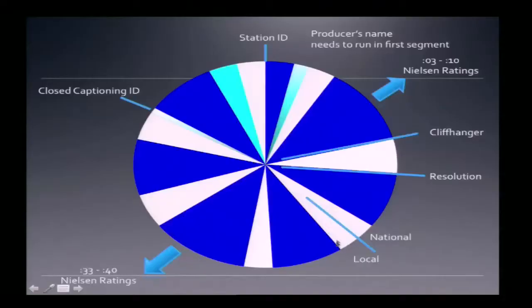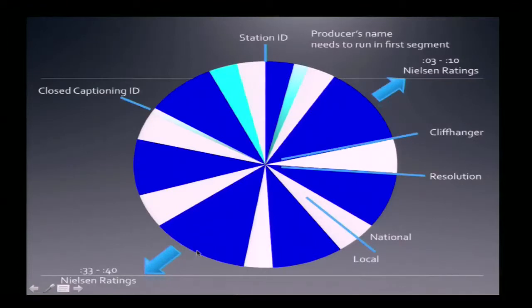If you see an upcut, you'll usually see another one about a minute later when they transition out of local ads back into the national ads. Then from 33 to 40 minutes, the Nielsen ratings are taken again — this applies to half-hour programs as well. Again, nobody wants to put a commercial break in here because they don't want to lose their audience. There's usually no commercial break in this window, and they follow the same cliffhanger and resolution pattern.